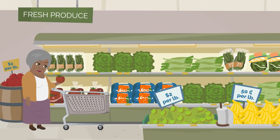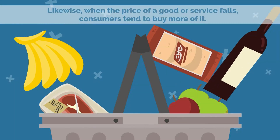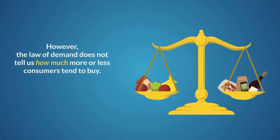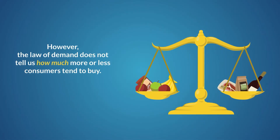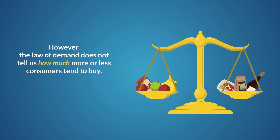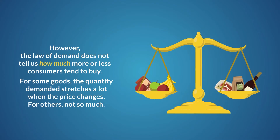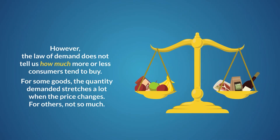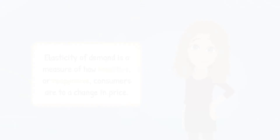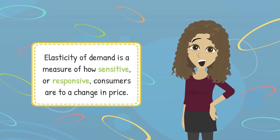The law of demand tells us that when the price of a good or service rises, consumers tend to buy less of it. Likewise, when the price of a good or service falls, consumers tend to buy more of it. However, the law of demand does not tell us how much more or less consumers tend to buy. For some goods, the quantity demanded stretches a lot when the price changes. For others, not so much. That's where the price elasticity of demand comes in.